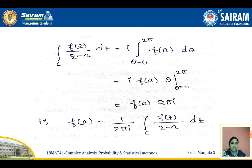Since f of a is a constant, we take it outside the integral. Integrating 1 with respect to theta gives theta, and substituting the limits 0 to 2 pi, we get f of a times 2 pi i. Therefore, f of a equals 1 by 2 pi i, integration over C of f of z divided by z minus a with respect to z. This is our required Cauchy's integral formula.